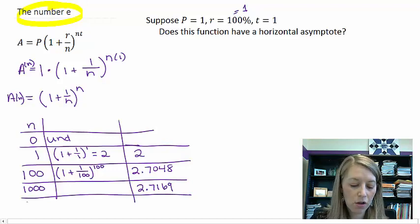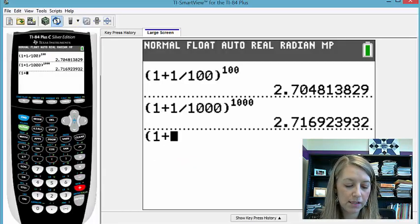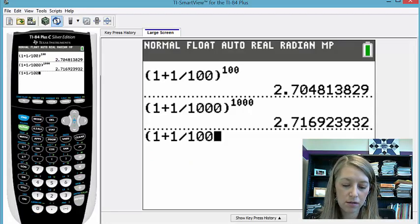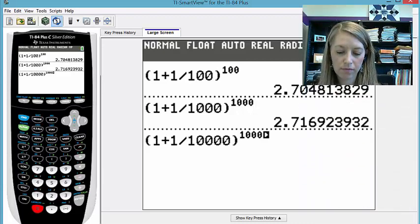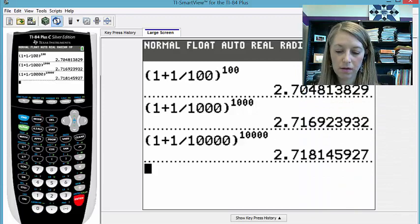And let's go a little bit farther. How about 10,000? 1 plus 1 over 10,000 to the 10,000th. And we get 2.718.